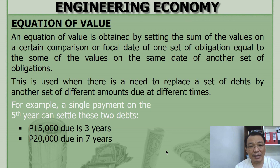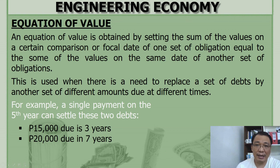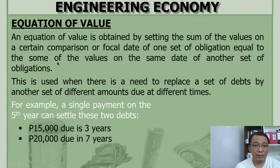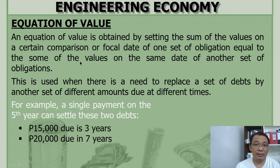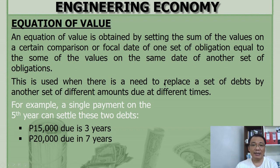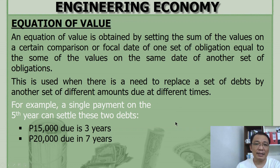That is the use of the equation of value. Going back to the definition, you set the sum of one set of obligations — add the sum of one set of obligations equal to the sum of the values on the same date of another set of obligations. So they share the same reference, the same focal date. To better understand the equation of value, let us solve a sample problem.